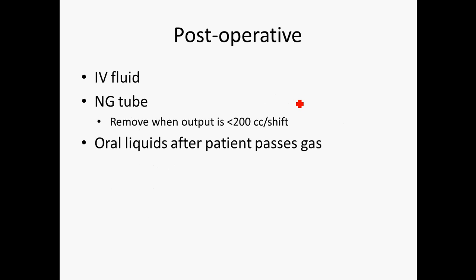In the post-operative period, maintain IV fluids and keep the patient on the NG tube — they won't be given food if there's an anastomosis in place. The NG tube can be removed when output is less than 200 cc per shift, meaning you're no longer suctioning significant content. Oral liquids can begin after the patient passes gas.